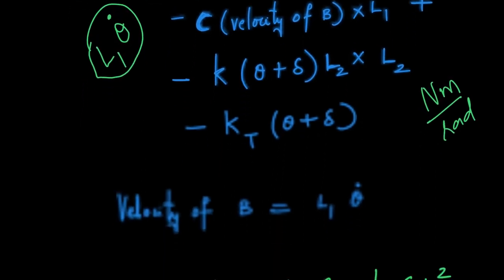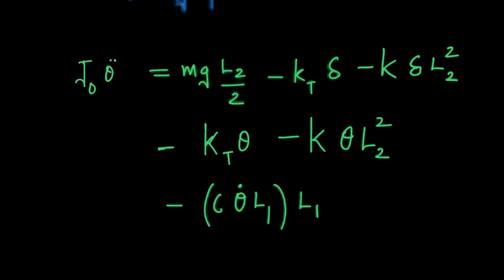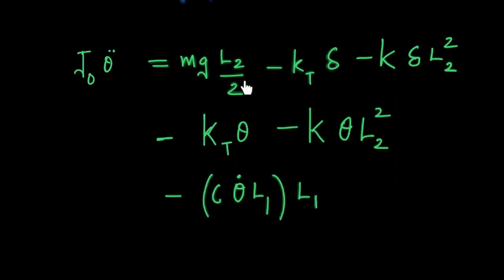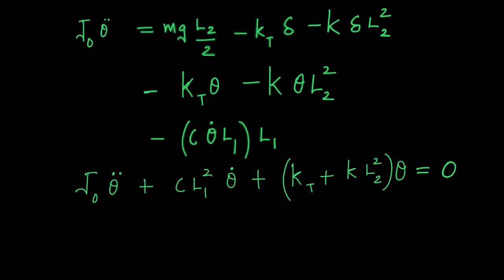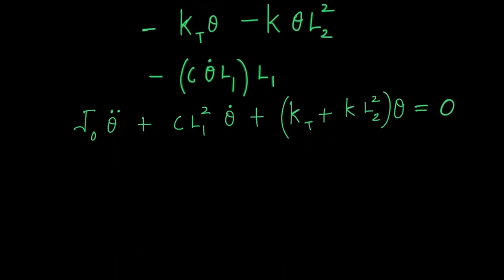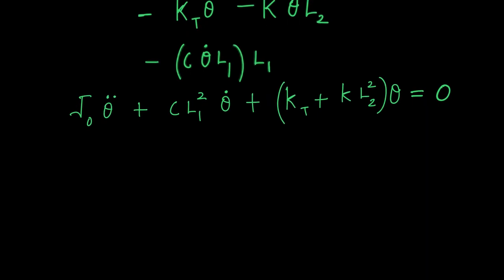Rearranging all six terms: the first three — involving only Delta — sum to zero from static equilibrium, leaving just three dynamic terms. The final governing equation has the same structure as mẍ + cẋ + kx = 0, the standard single degree of freedom equation, except this one is for pure rotation rather than linear translation.